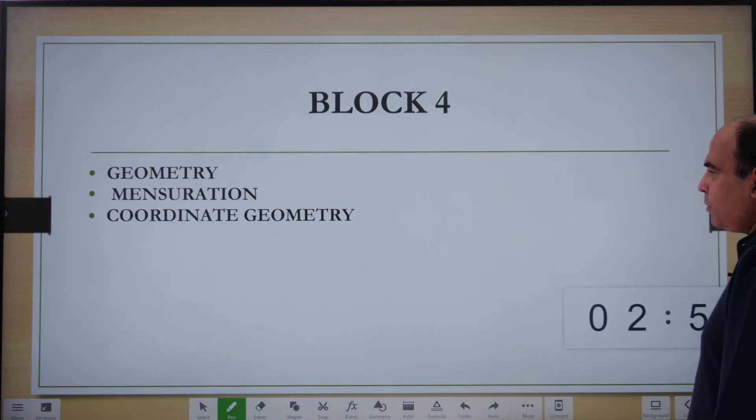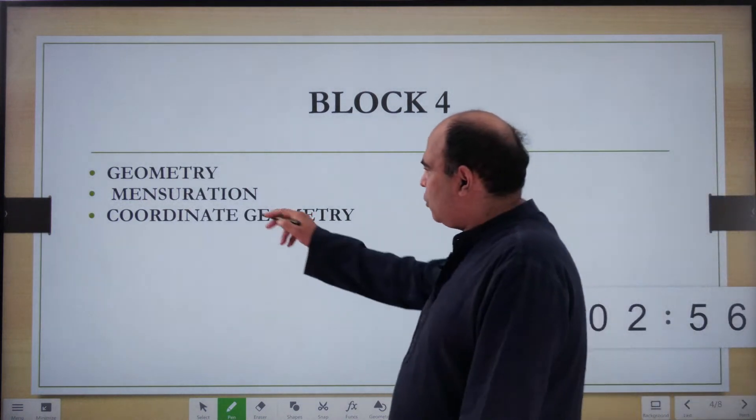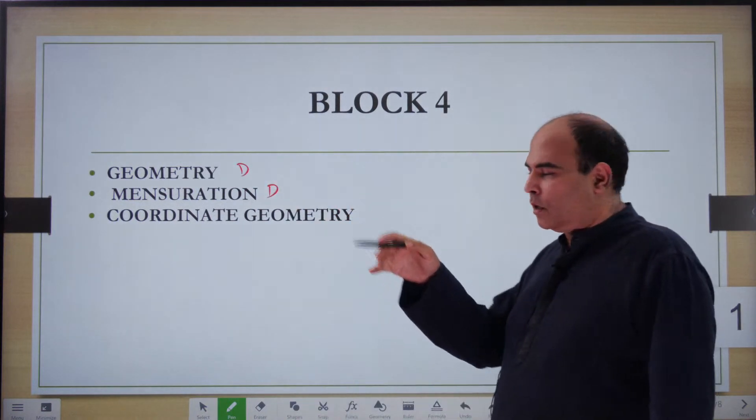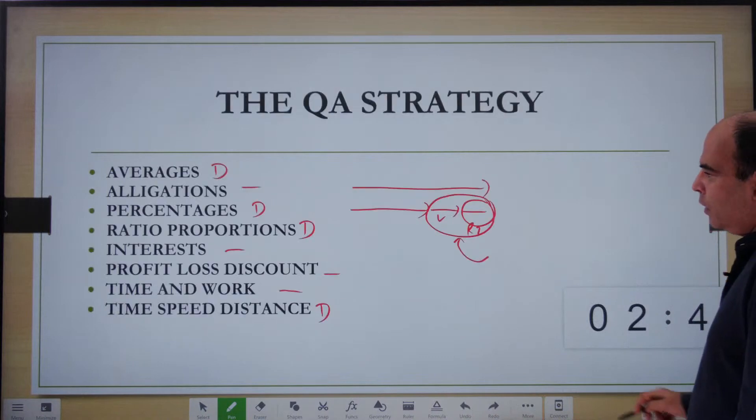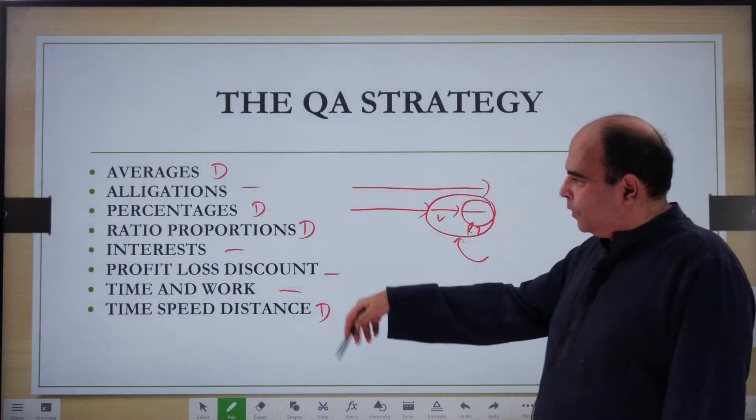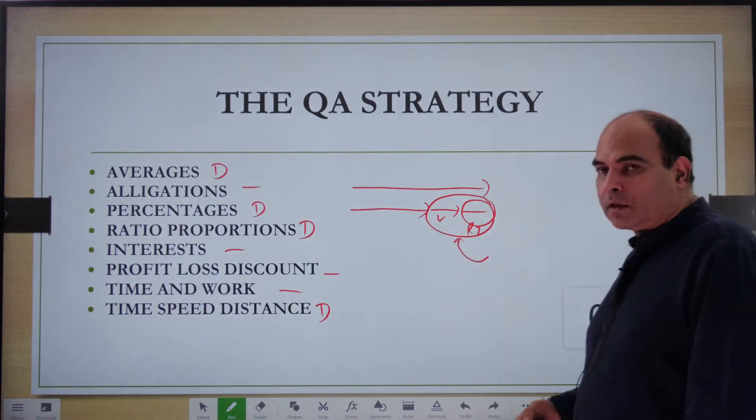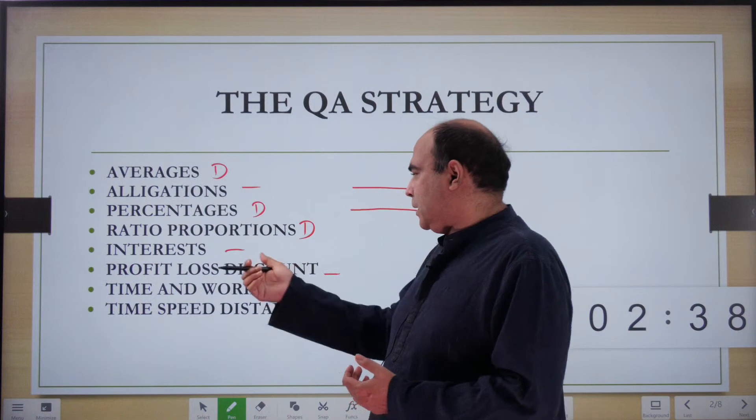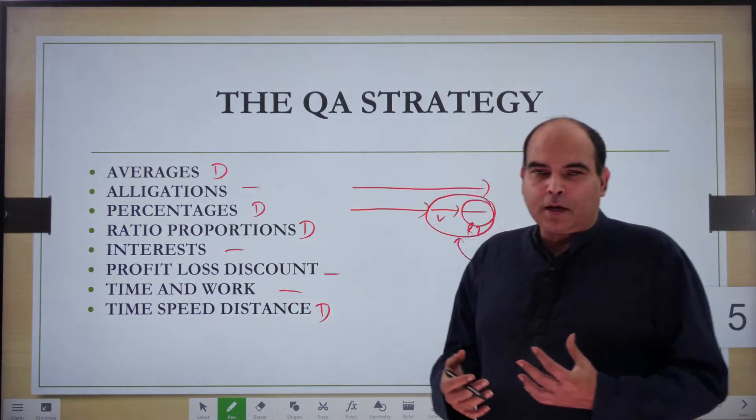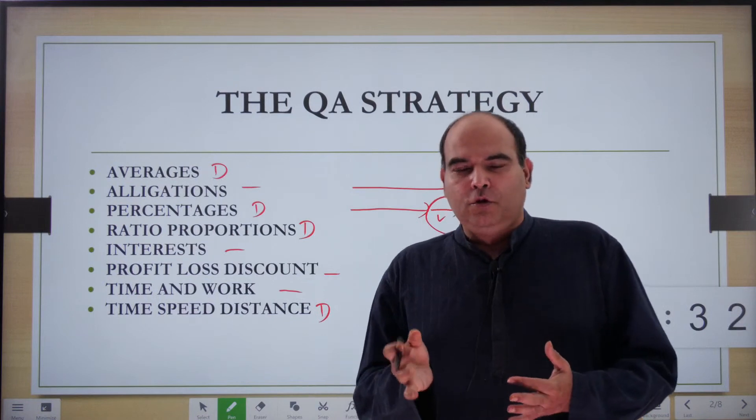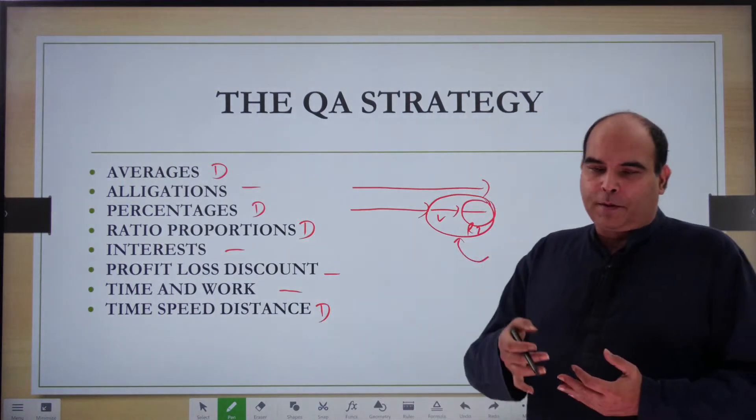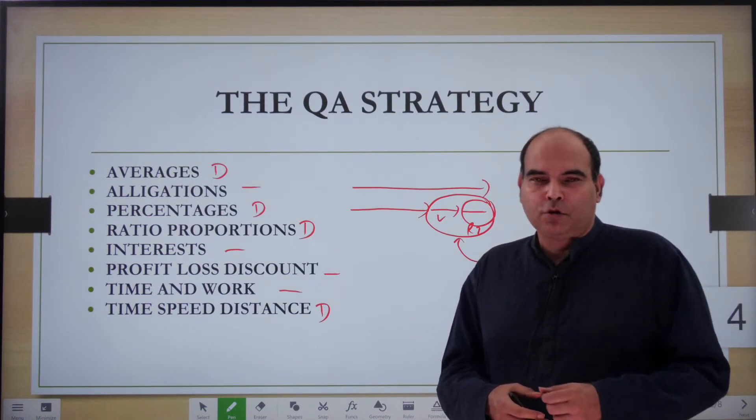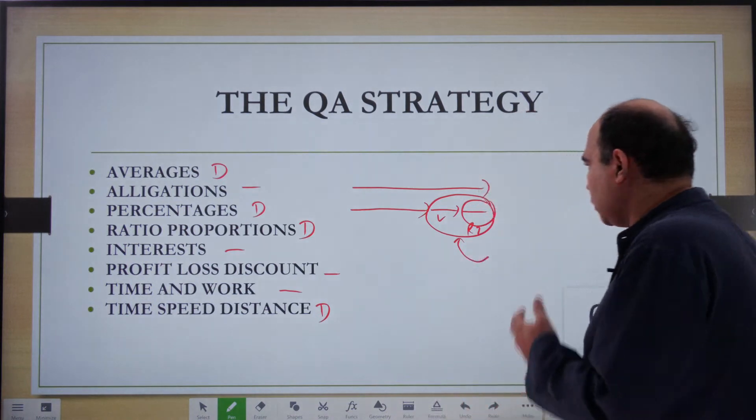Block 4, the deep dive chapter is geometry. So that makes it six now - four chapters in Block 2-3. Alligations is just a method to solve weighted average questions, so you just need to know that method and how it applies. Interests, profit loss, and time and work - they're not very deep chapters. You just go through LOD 1 and 2 once, you should be ready. If you've done LOD 1-2 of these chapters once, you should be able to solve most past year questions.